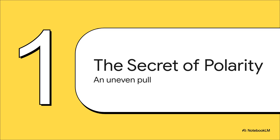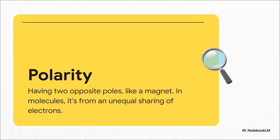It's basically a tiny molecular game of tug-of-war. So what is polarity? Well, think about a simple magnet, right? It's got a north pole and a south pole. Molecules can have the exact same thing, but with tiny electrical charges. This happens when the electrons zipping around inside the molecule aren't shared perfectly even. One end becomes a little bit negative, and the other becomes a little bit positive.